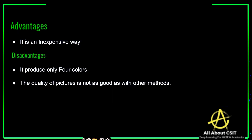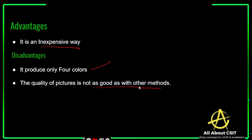The advantage of beam penetration is that it is inexpensive to implement for displaying colors. The disadvantages are that it produces only four colors — red, green, yellow, and orange — and the picture quality is not as good compared to other methods. Based on your requirements, you can choose either the shadow mask technique or the beam penetration method.